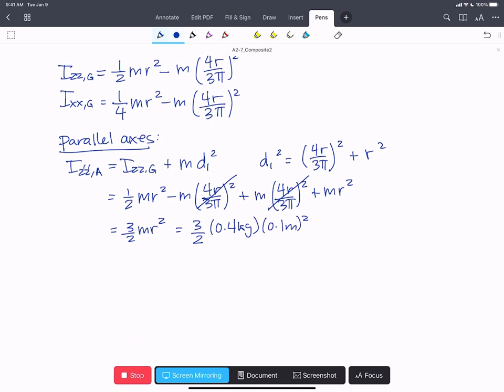we find that we have a value of i_z'z' about A equal to 0.006 kilograms meters squared.